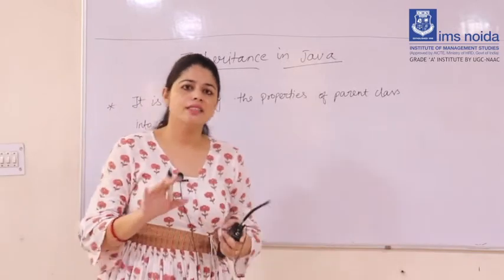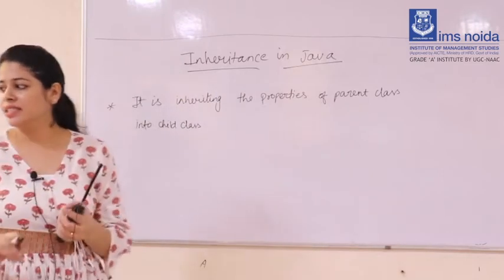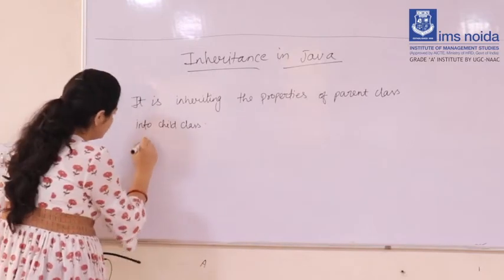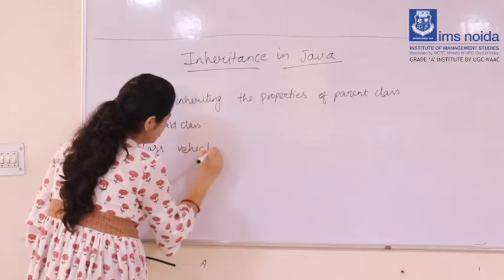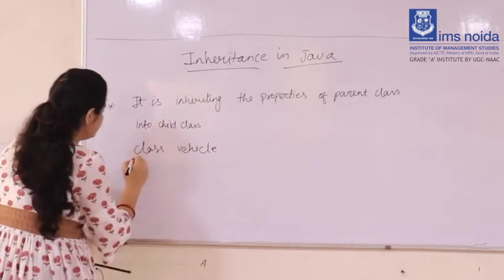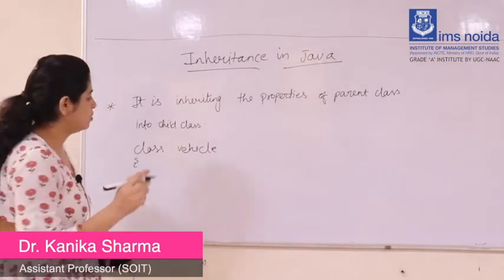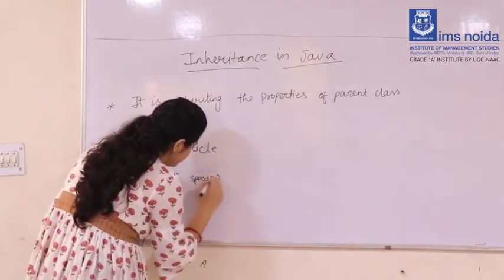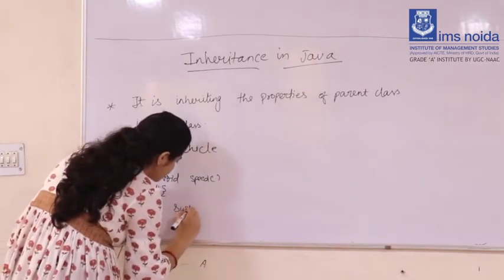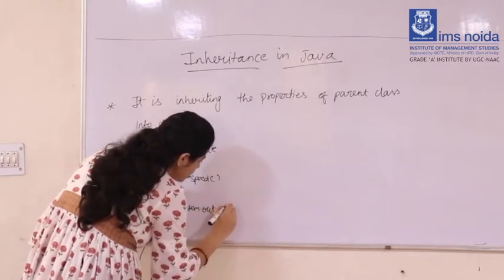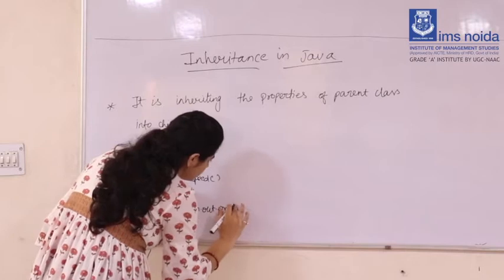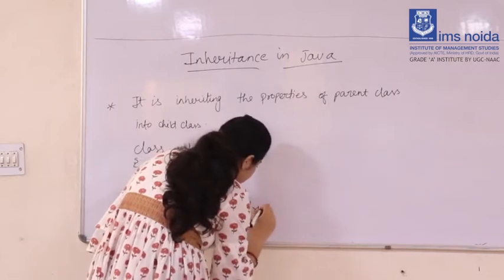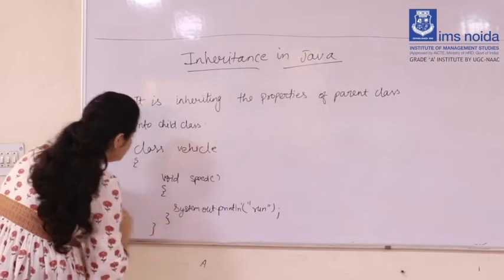Let's discuss an example. I am taking a class called Vehicle. It can have any property or method, so I am taking here a method — void speed() — and inside it System.out.println printing 'run'. This is a basic simple class: a class Vehicle with a speed method that prints 'run'.